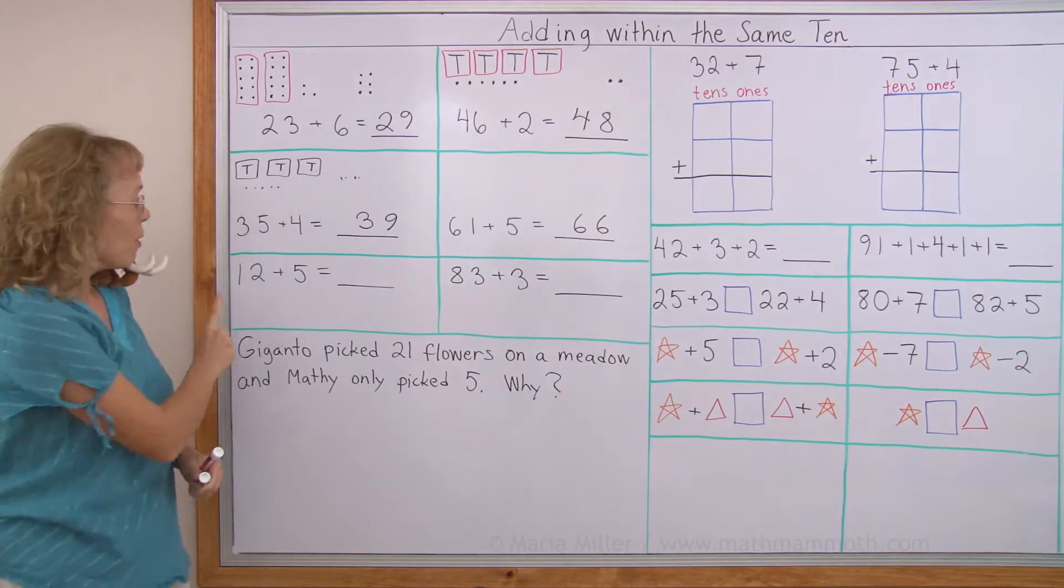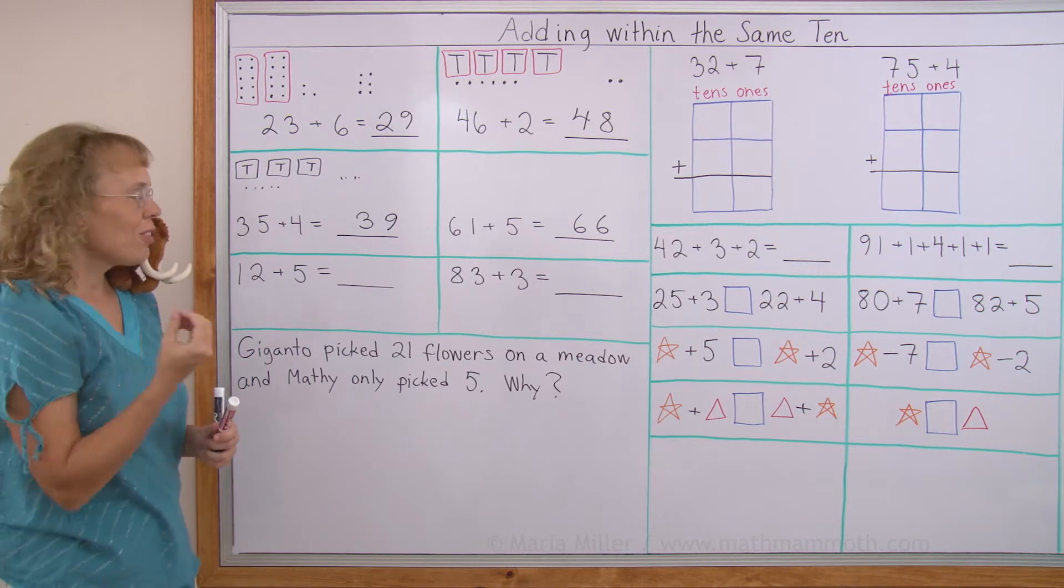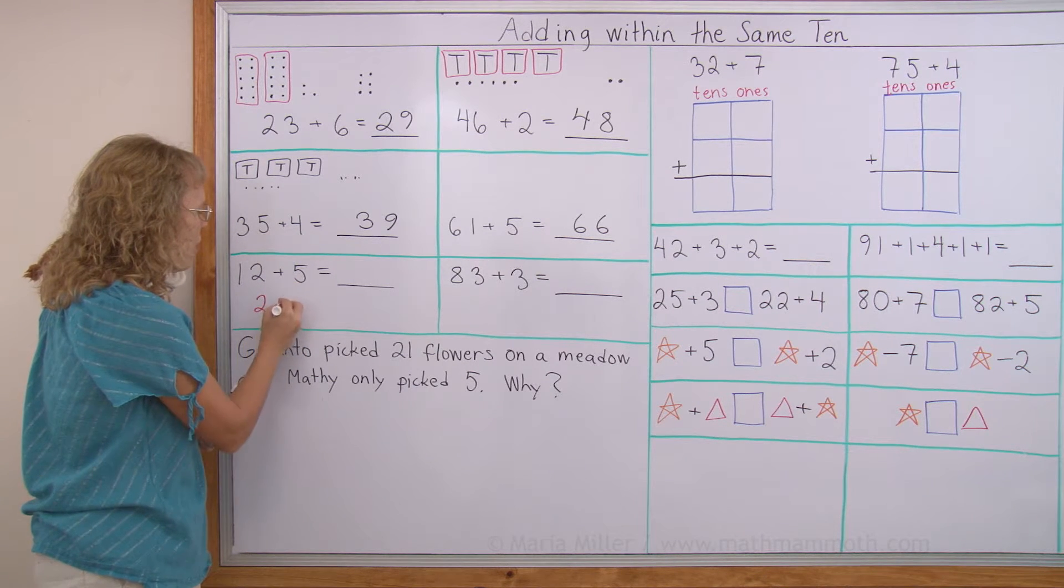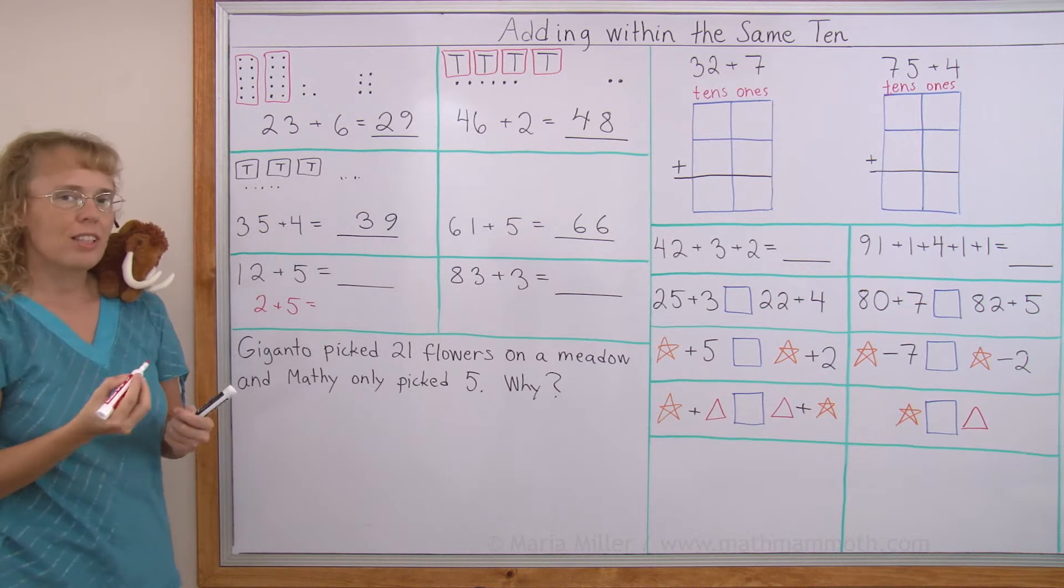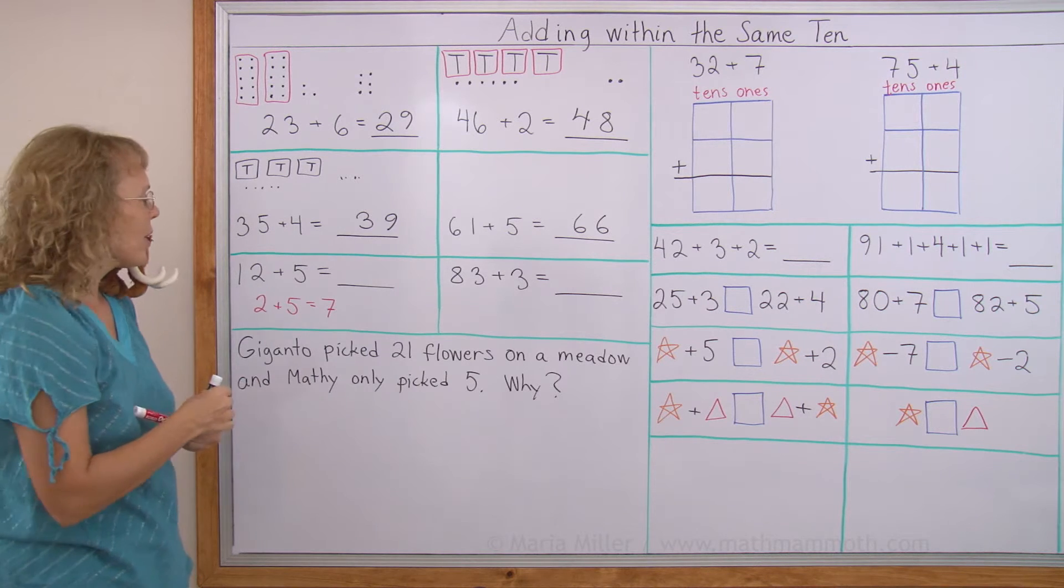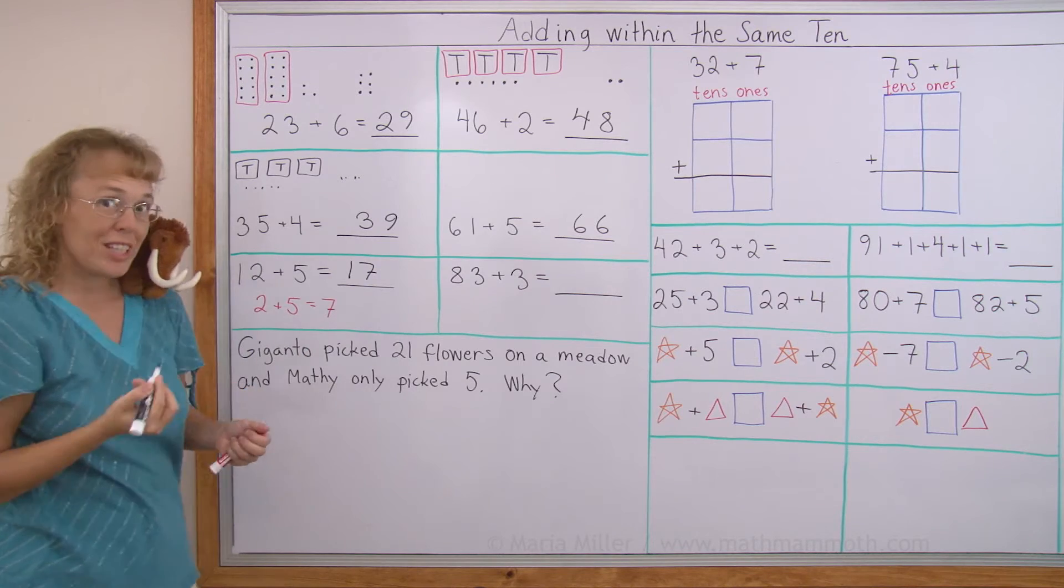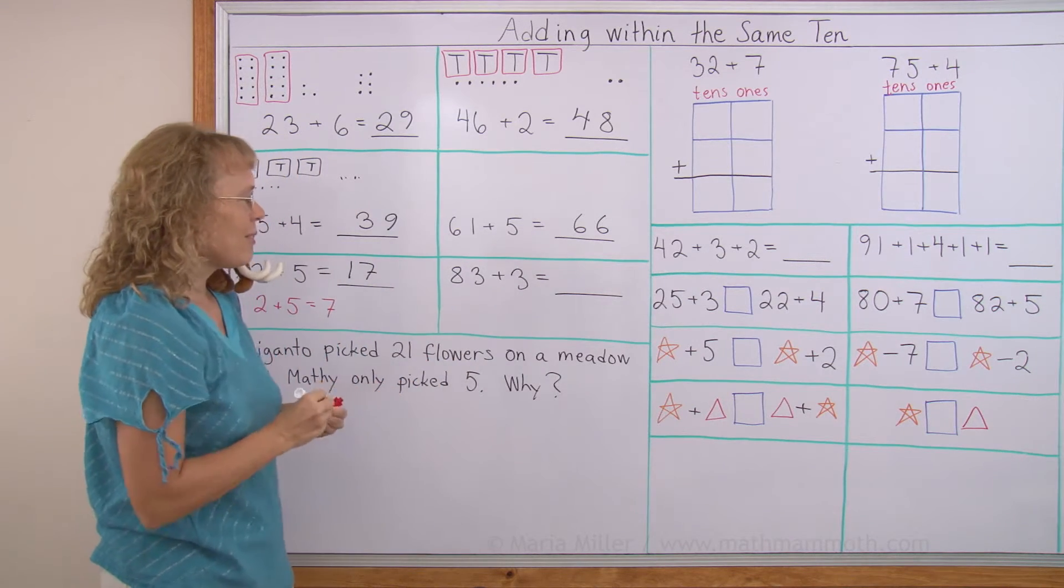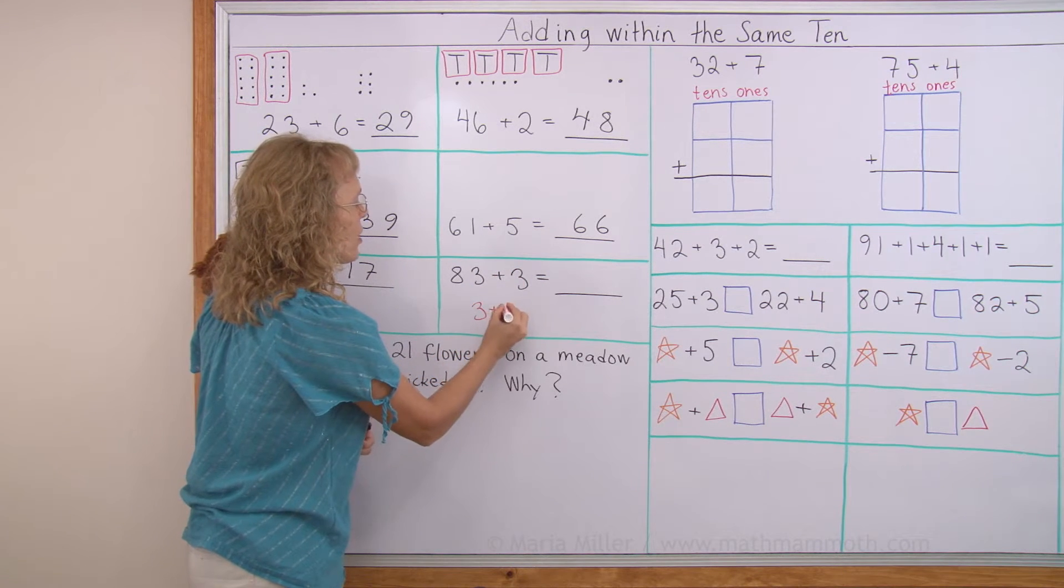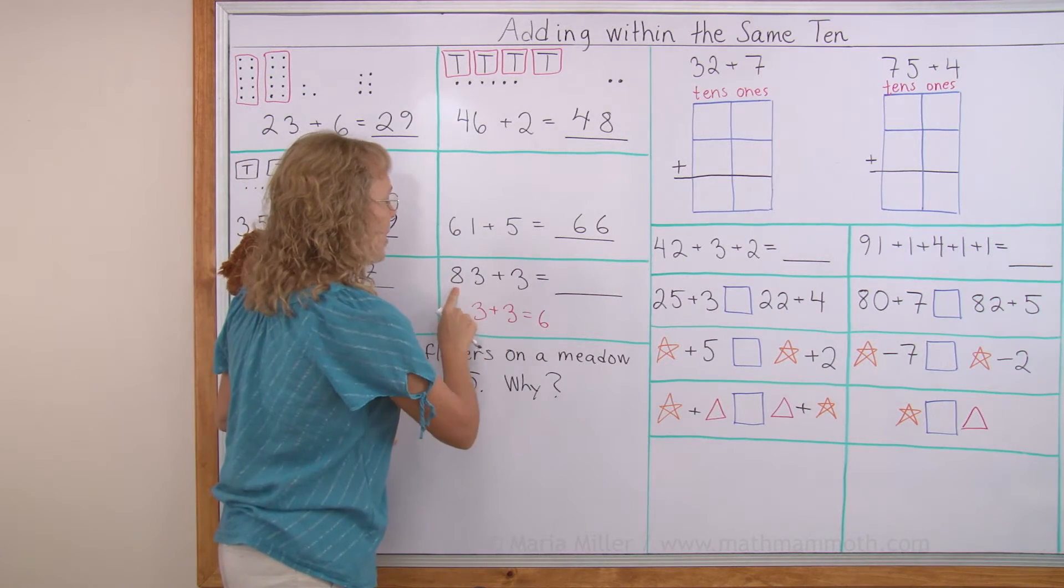12 plus 5 means 1 10 and 2 plus 5. Now, again, I look at these little dots, the 1s. 2 and 5. In fact, let me write here like a helping problem. We're going to solve this first. 2 plus 5 equals 7. That's a helping problem. And then 12 plus 5 equals 1 10 and 7. 83 plus 3. Let me write the helping problem. I just used the 1s from here and the 1s from here. 3 plus 3 equals 6. And so the final answer for this would be 86.